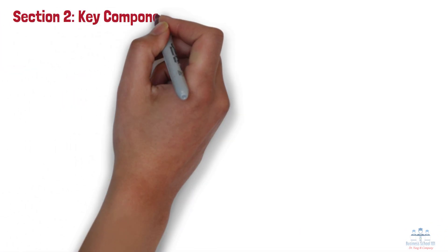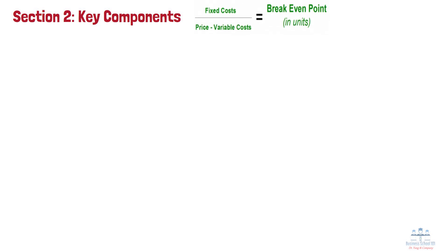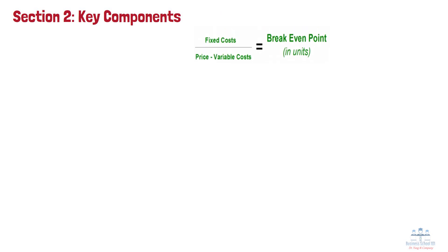Break-even analysis is built on three fundamental components: fixed costs, variable costs, and sales price per unit. Let's discuss them in detail.